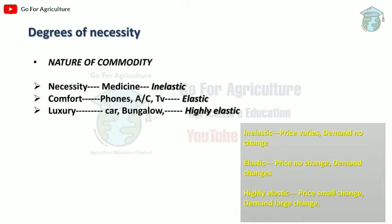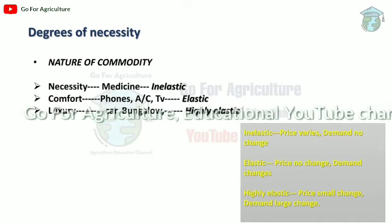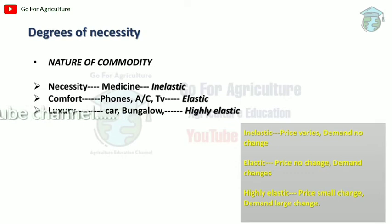The degree of necessity refers to the nature of a commodity. Commodities can be divided into necessities, comforts, and luxuries. Necessities are very important things like air, water, shelter, and food. In economic terms, a classic example is medicine — like insulin for diabetes patients. Whether price increases or decreases, the demand for necessities remains the same. So necessities are inelastic.